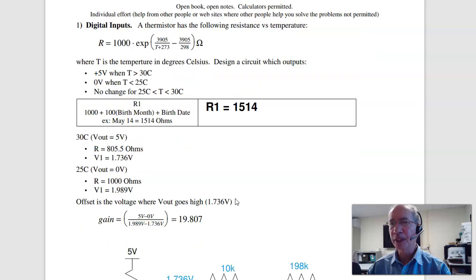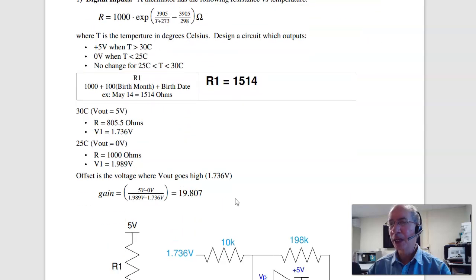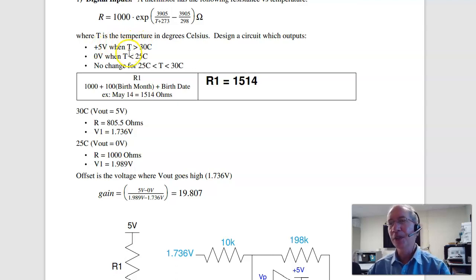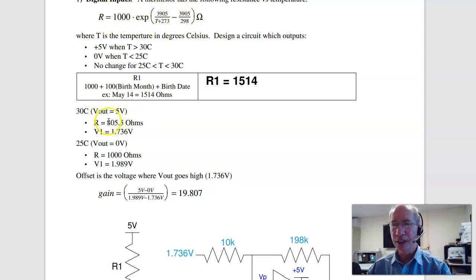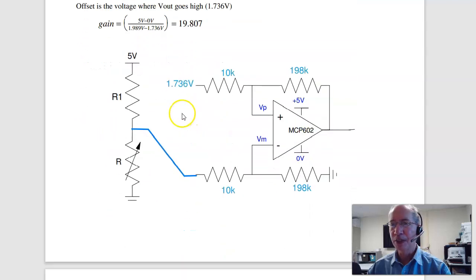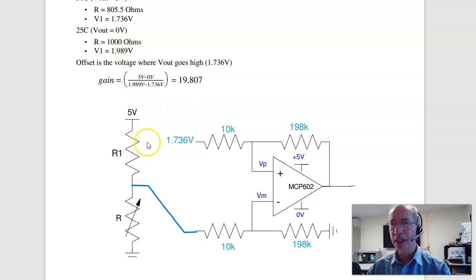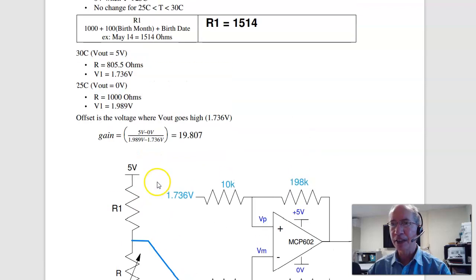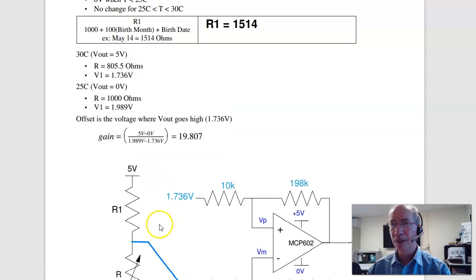The first problem is to build a Schmitt trigger. We want a binary output, so pick and read it. It turns on when the temperature is greater than 30 Celsius, and turns off when it's less than 25 Celsius. From the thermistor equation, 30 Celsius is 805 ohms. If I assume R1 is 1514 ohms, that gives 1.7 volts at 30 Celsius.